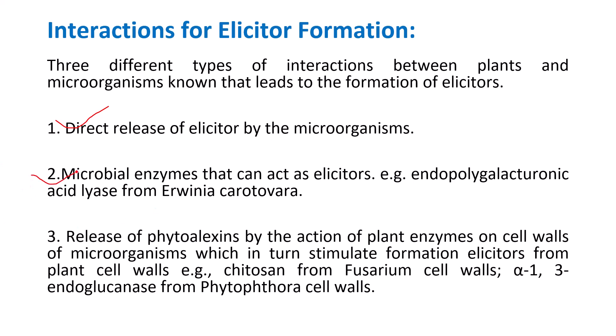The second interaction involves microbial enzymes that act as elicitors. For example, endo-polygalacturonase from Erwinia carotovora can be extracted and added to the culture. The third interaction involves release of phytoelicitors by the action of plant enzymes on the cell wall of microorganisms — for example, chitosan from Phytophthora cell wall, and alpha-1,3-endoglucanase from phytopathogenic cell walls.